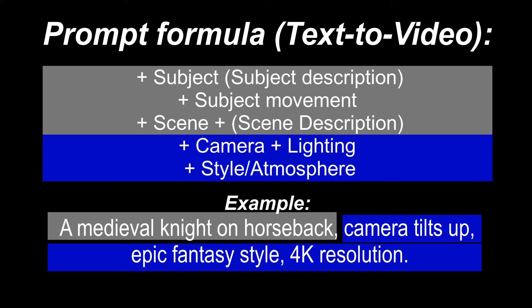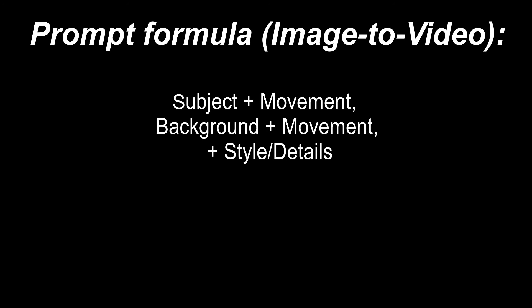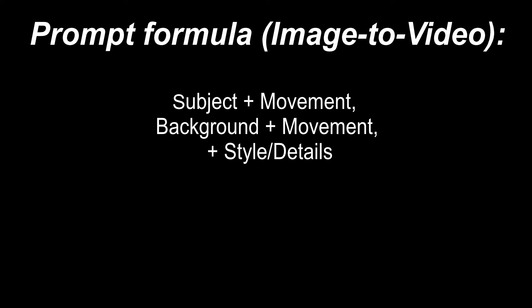Be specific about what you want the AI to create — the more detailed, the better the result. The image to video prompt formula is: subject plus movement, background plus movement, plus style details. Example: a red fox running through a snowy forest, 360-degree spin, cinematic, hyper-realistic. With these prompt hacks, you'll be steering Kling AI like a pro captain navigating the seas of AI filmmaking.